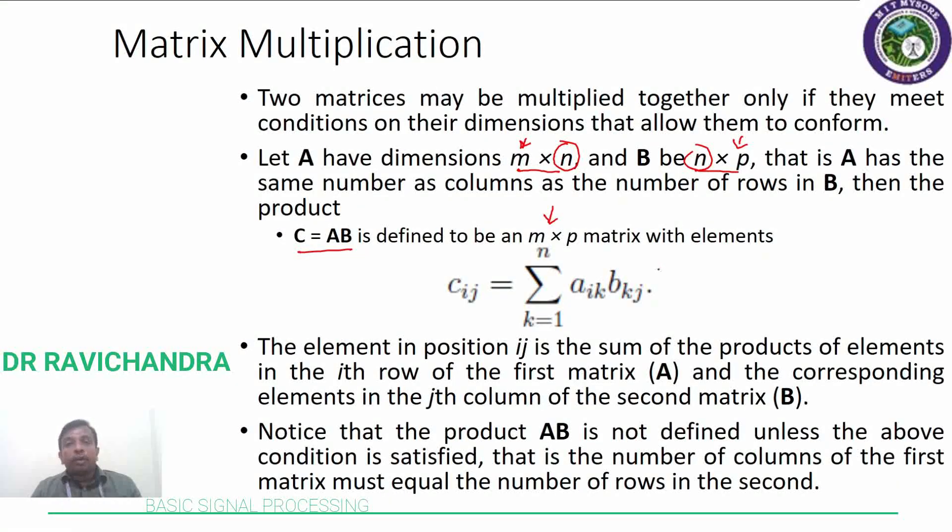And the elements of matrix C, that is the product matrix C, is defined individually by this formula: C_ij is equal to summation of k equals 1 to n, A_ik times B_kj. The element in position ij is the sum of products of the element in the ith row of the first matrix and the corresponding elements in the jth column of the second matrix B.